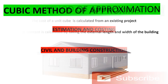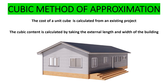What is this cubic method of approximation? In this method, the cost of a unit cube is calculated from an existing project. You find that you have an existing project, so you calculate the cost of a cube from that project. In this cubic content, we need to get the external length of the building.